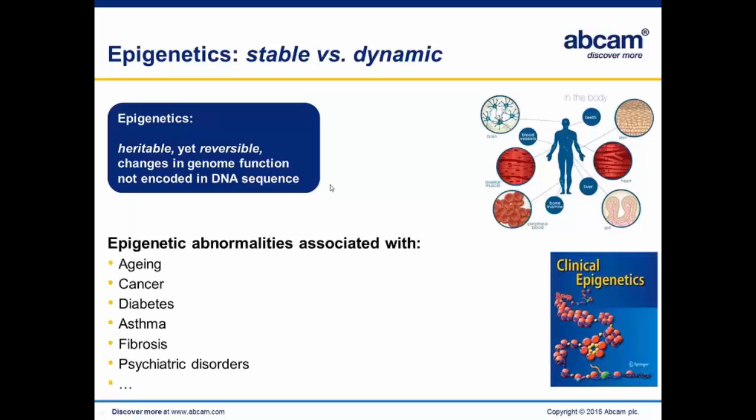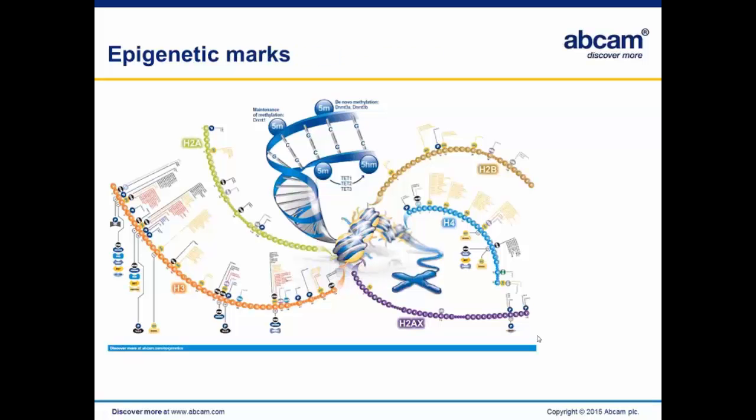Many diseases and clinical phenotypes have been associated with epigenetic abnormalities, and certain journals arose to cover these progresses, like Clinical Epigenetics. Epigenetic marks refer to modifications to the DNA molecule itself, or to proteins where the DNA is wrapped around — the histones.